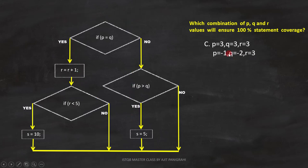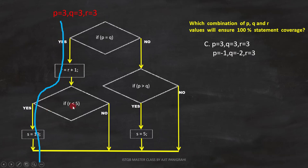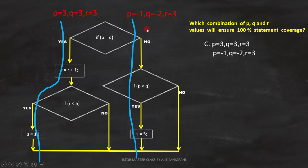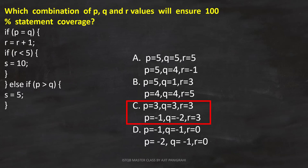Now we'll analyze Option C. First combination: p equals 3, q equals 3, r equals 3. Here p and q are equal, so condition 1 becomes true. And r is less than 5, so the second condition also becomes true. Second combination: p equals negative 1, q equals negative 2, r equals 3. Here p is not equal to q, so the first condition fails. And p is greater than q, so the second condition becomes true. We can see that all the statements are covered. Therefore, Option C is the correct answer.